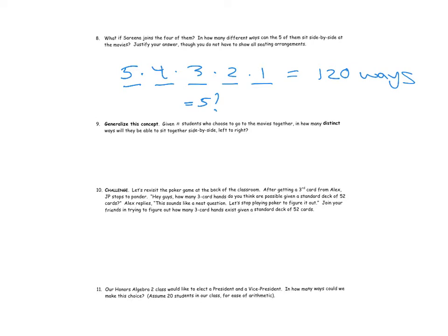So given n students, how many distinct ways will they be able to sit together side by side? So in general, that would be n factorial, which is n times n minus one times n minus two, all the way down to one.